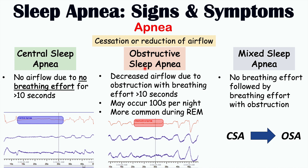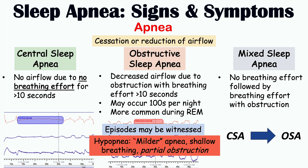An important feature of these apnea episodes is that they can often be witnessed by the patient's spouse or partner, since the patient may not even know they are having these episodes during sleep. There is also a milder version known as hypopneas, involving shallow breathing. In obstructive sleep apnea, hypopneas involve partial obstruction — defined as 30% or greater obstruction of the airway — whereas a full apnea episode involves 90% or complete obstruction. Hypopneas can be thought of as a milder form of an apnea episode.